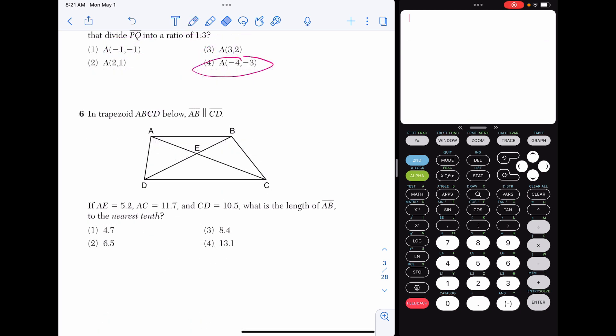Number six, in trapezoid ABCD below, AB is parallel to CD. So I'm just going to mark those as parallel. AE is 5.2, AC is 11.7. I notice they're giving me that whole diagonal. So what I'm going to actually do is find the length of EC, which if I subtract those values, I get 6.5. CD is 10.5 and we're looking for the length of AB. If we take a look at this picture, these two triangles are going to be similar to one another. That's because they have all congruent angles. We know that because of the parallel lines and the transversal, that Z shape again and the vertical angles too.